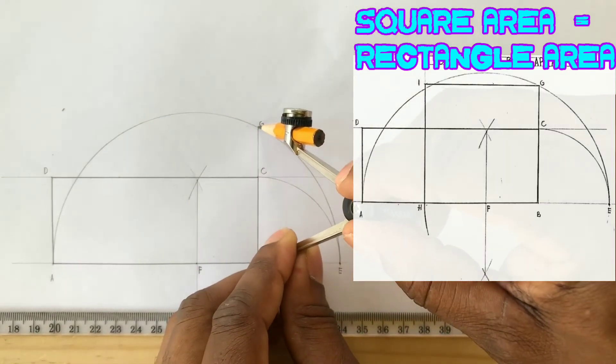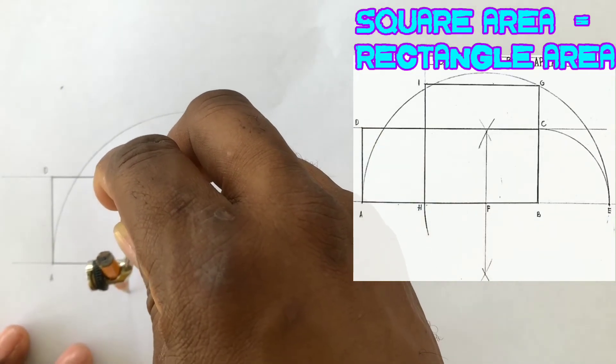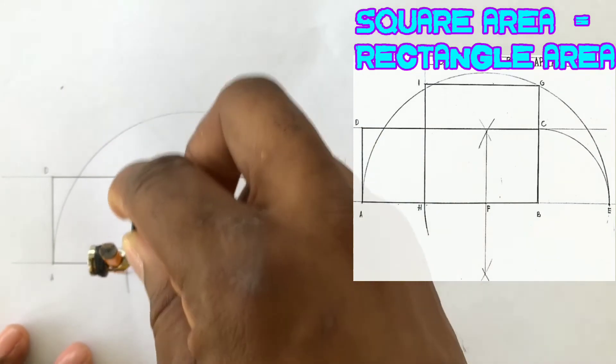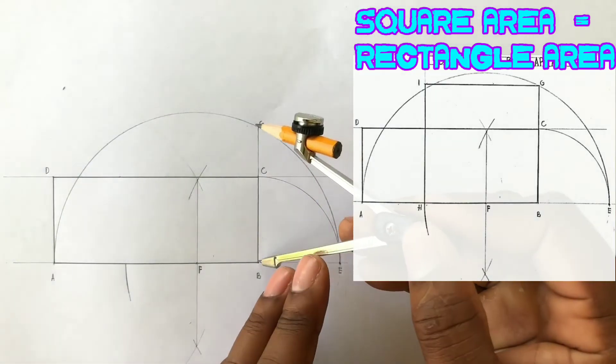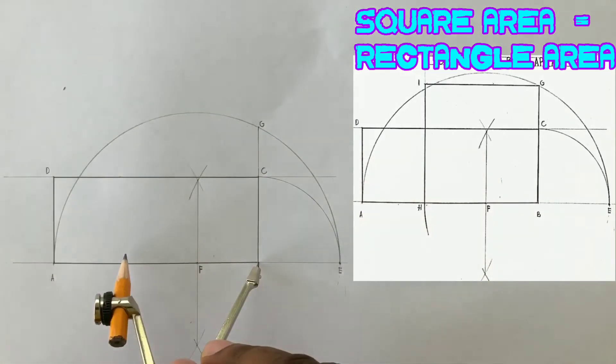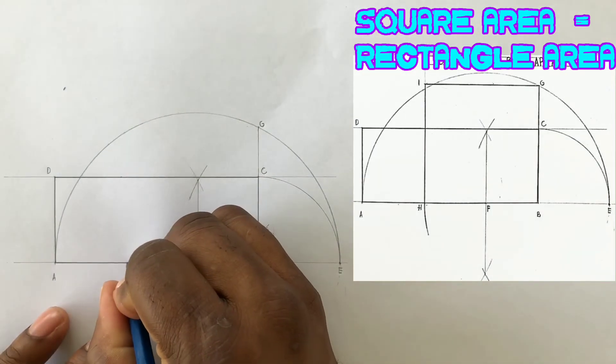Now open your compass to BG and from B scribe an arc to touch our AB line, giving us point H. Label point H.